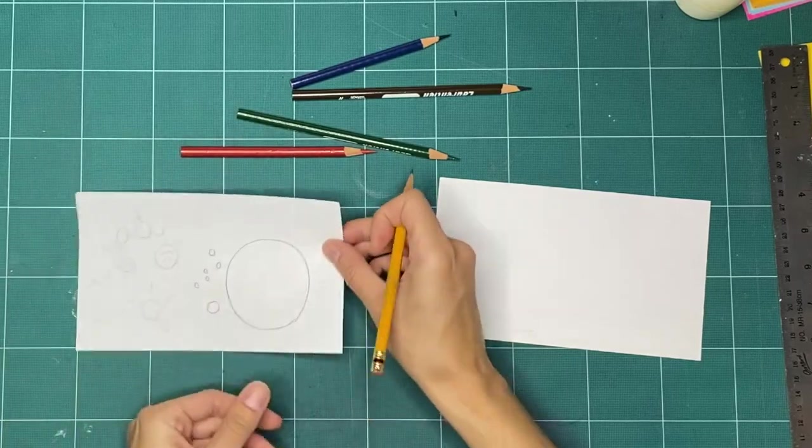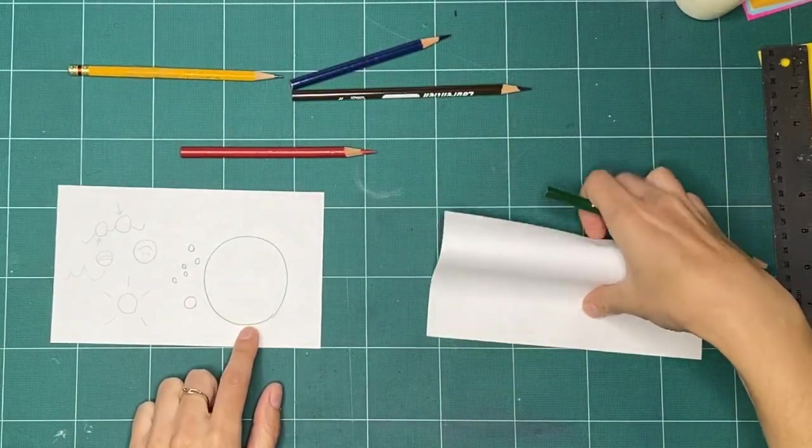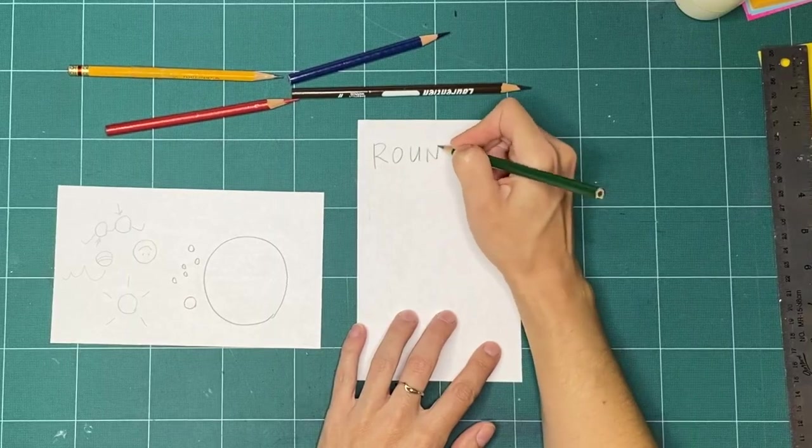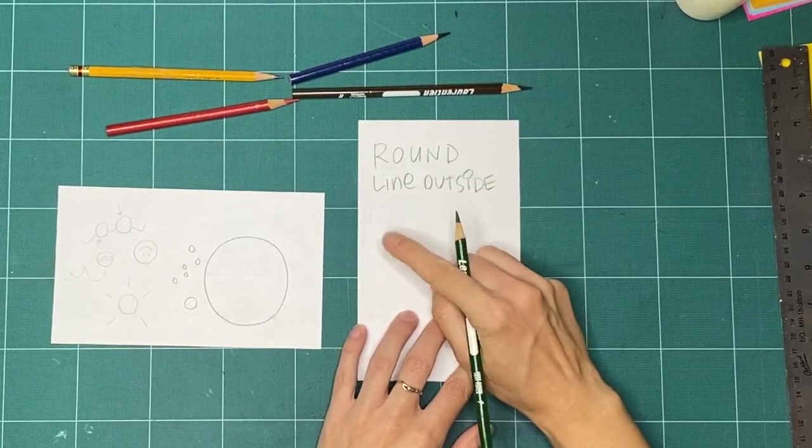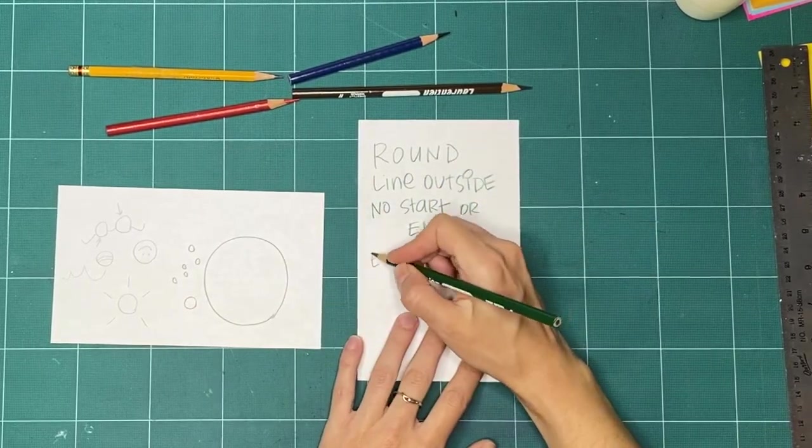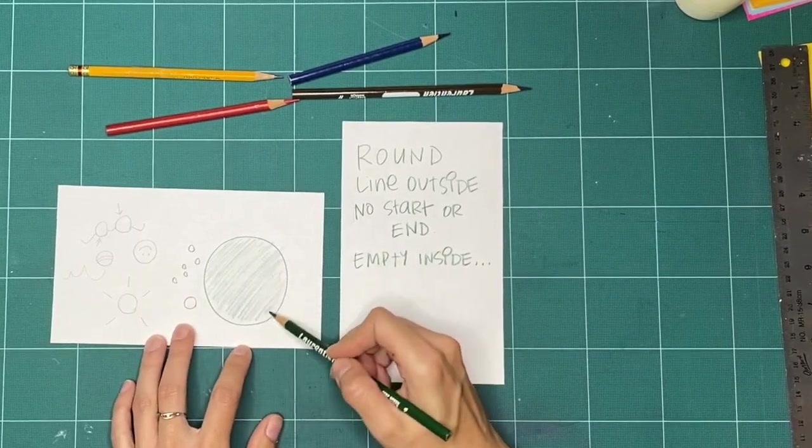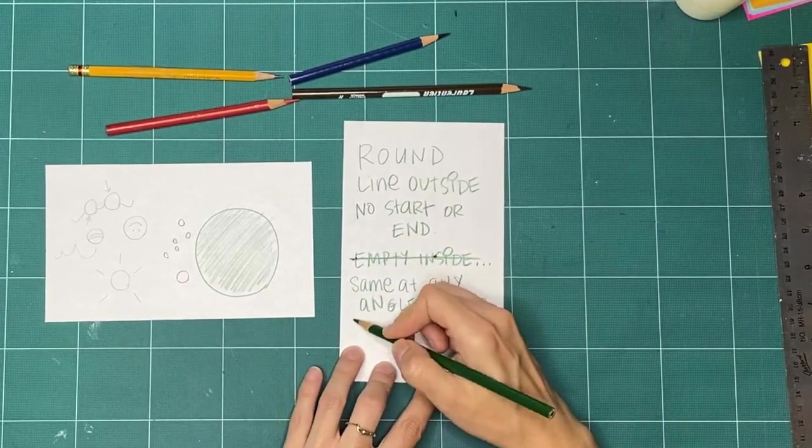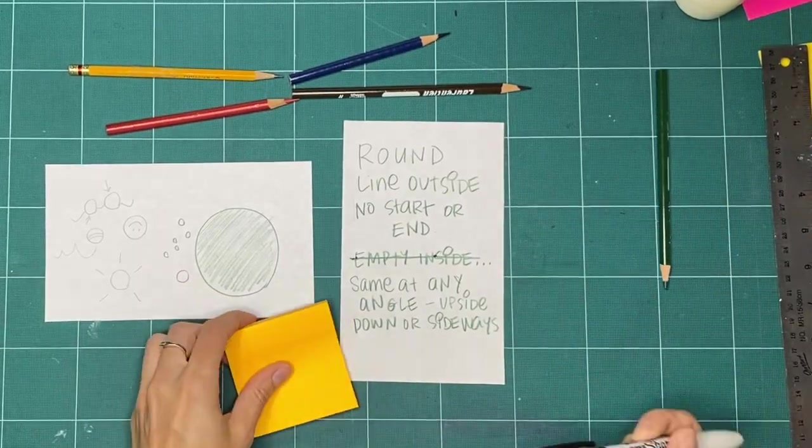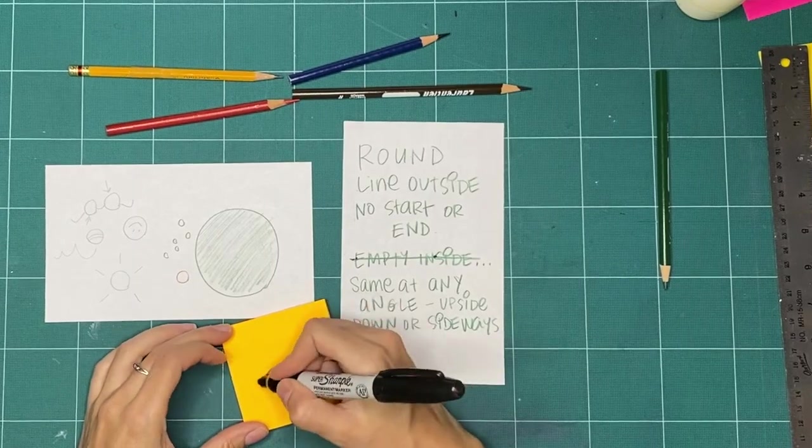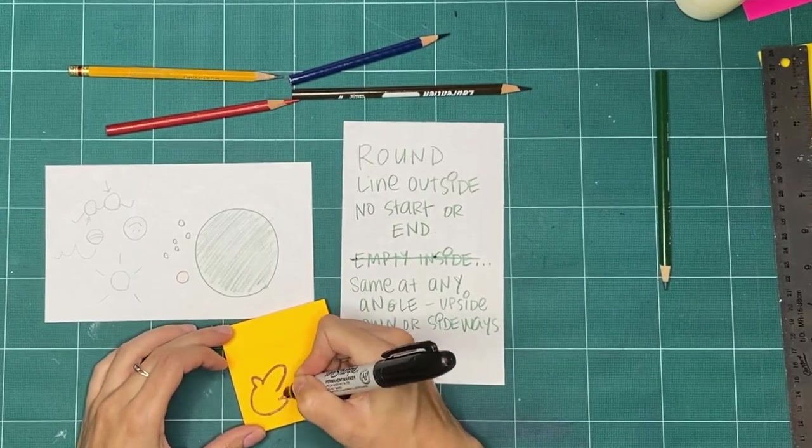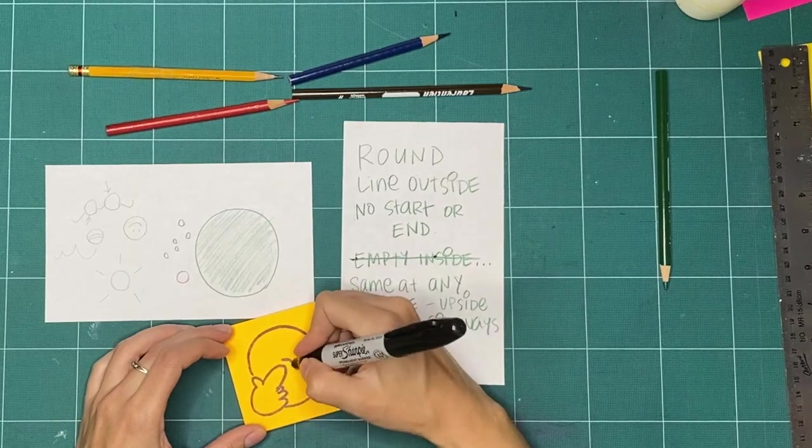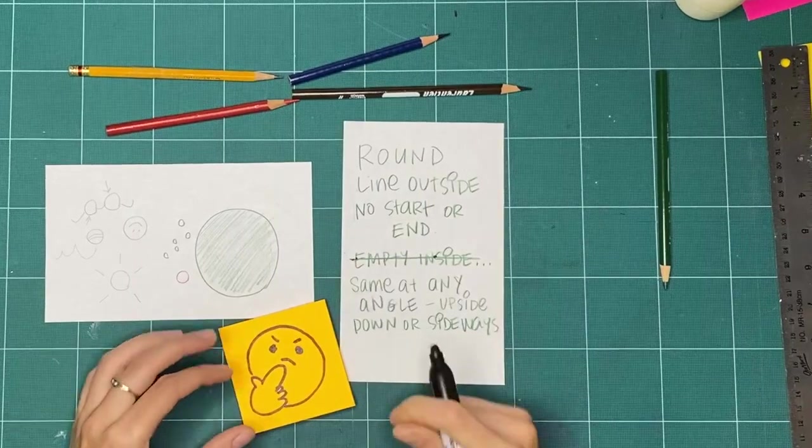Let's start by trying to define a circle with words. Take a look at this circle, or think about a circle you've seen before. What are some of the things you notice? If you want, make a list of some of the things you notice. With all the things you noticed, could you try describing a circle to someone else, without showing them a circle? If you can, great! But if you can't, don't be discouraged.